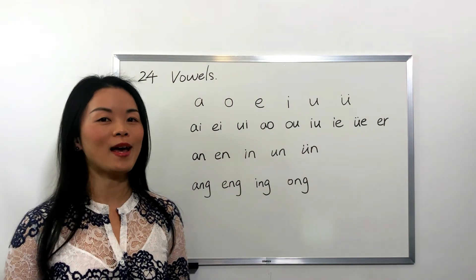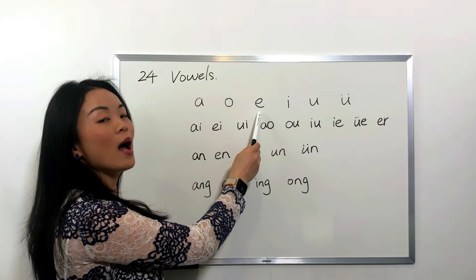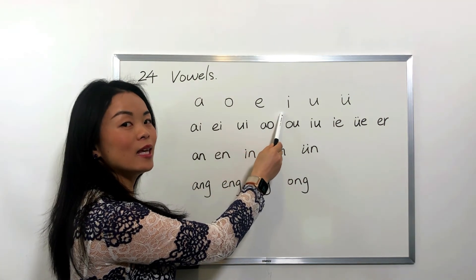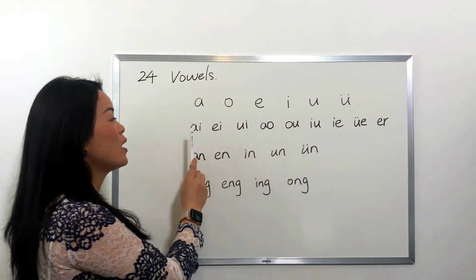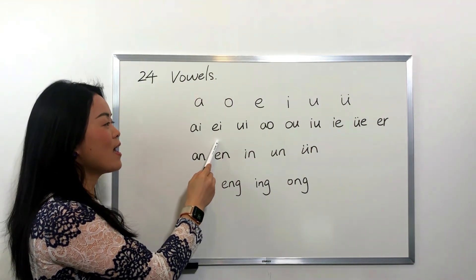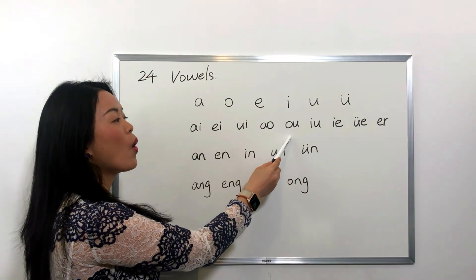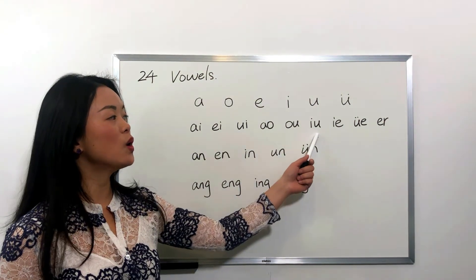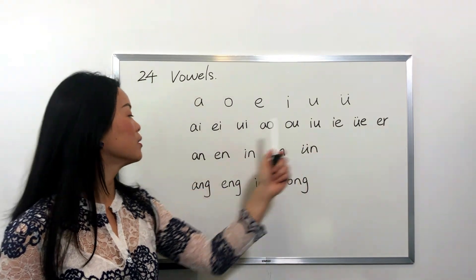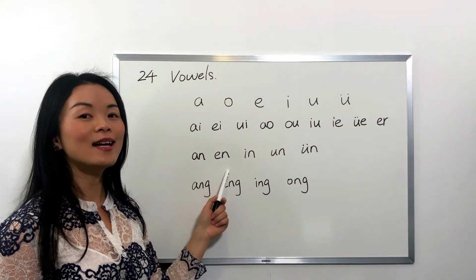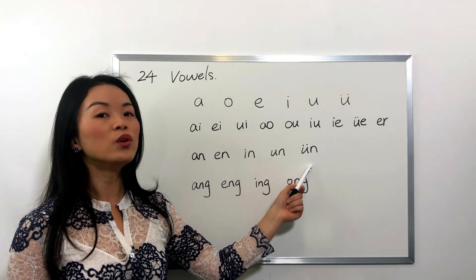Let's read one more time: A, O, E, I, W, U, I, A, W, A, O, O, U, Ye, Y, R, An, En, Yin, Wong, Yin.